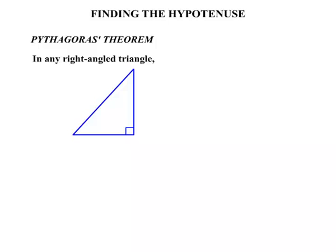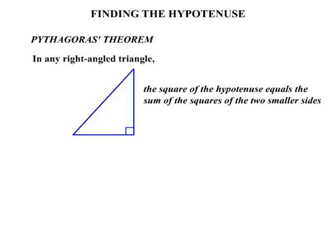Now in this lesson on Pythagoras Theorem, we are going to be looking at finding the hypotenuse. Pythagoras Theorem is that in any right-angled triangle, and there's an example of a right-angled triangle, the square of the hypotenuse equals the sum of the squares of the two smaller sides.